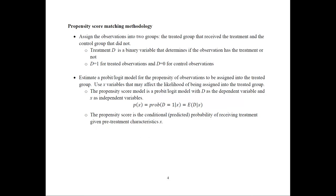In the propensity score matching methodology, Step 1 is assigning observations into two groups: the treated group that received the treatment and the control group that does not. Be careful how you define the treated group — it is the group of interest and the one we want to calculate the effect on. Sometimes the treated group opted out of a program, so the definition depends on what is of interest.